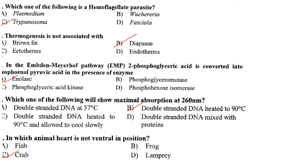In the Embden-Meyerhof pathway, 2-phosphoglyceric acid is converted into phosphoenolpyruvic acid in the presence of the enzyme enolase. That is the enzyme involved in the glycolytic pathway.